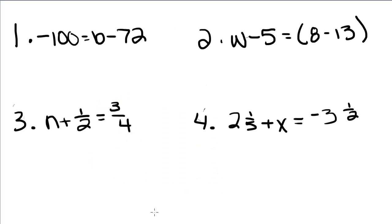Okay, so this time we have negative 100 equals b minus 72. Well, this time we have subtraction.